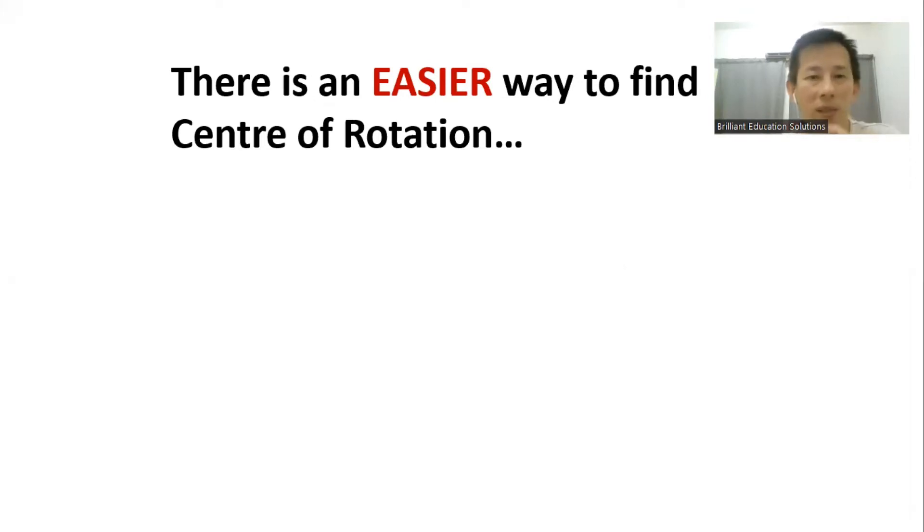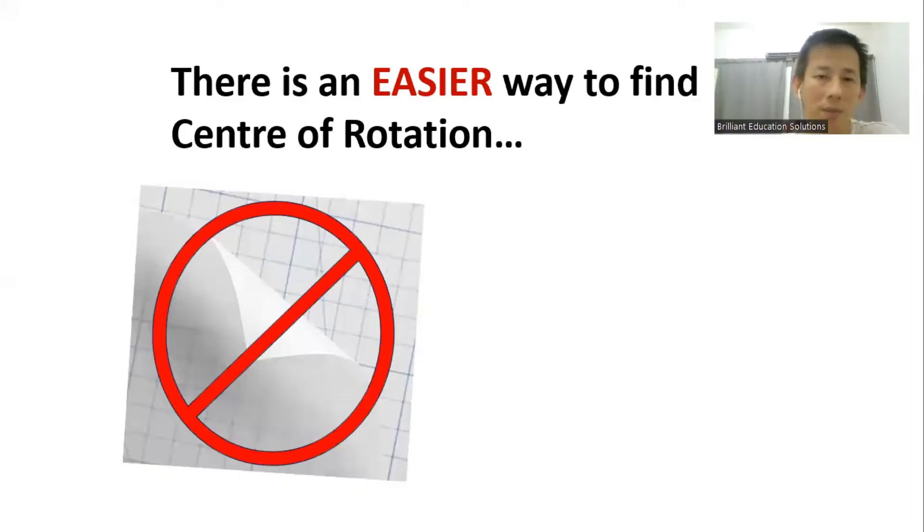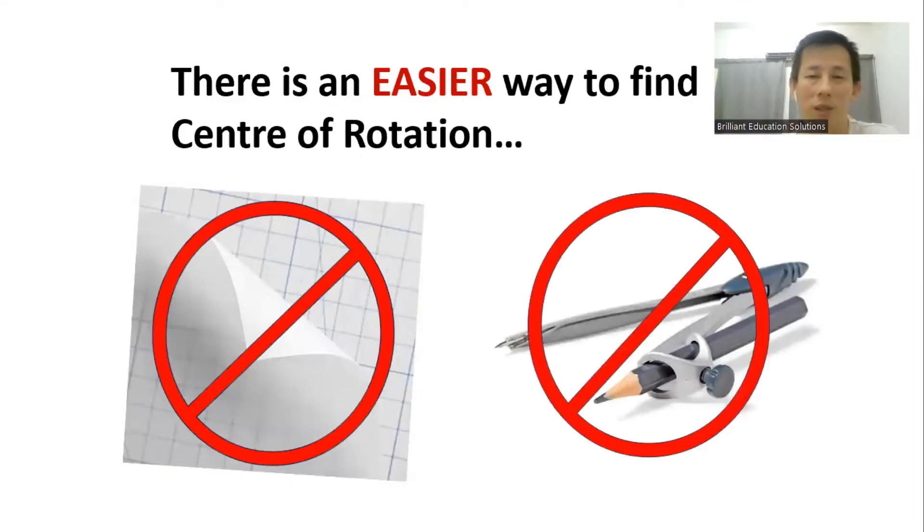This is an easier way to find the center of rotation without using tracing paper or a compass. All you need is a trusty ruler. That's all.